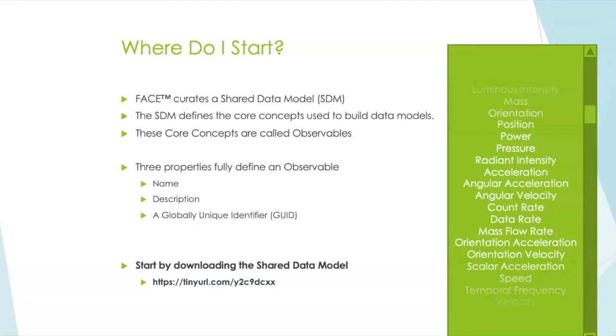Also, sometimes the names change. Names don't change very often, but sometimes it happens in order for us to reduce ambiguity. What happened between the shared data model edition 2.1 and 3.0, we actually changed the observable called unique identifier to simply identifier. However, since the GUID didn't change, we actually had some sort of continuity from one shared data model to the next.